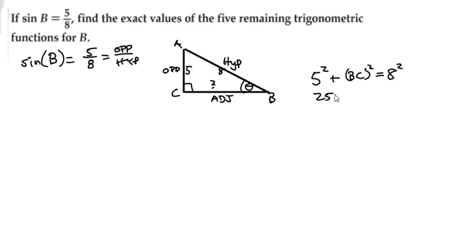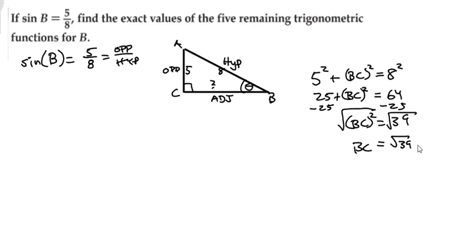So five squared is 25, we still have bc squared, and then is equal to 64, these are adding. So now let's subtract 25 from both sides. That's going to give me 39 is equal to bc squared. And then to get rid of that, we take the square root. So we're going to get the length of bc, which is this adjacent side, is equal to the square root of 39, because this cannot be simplified anymore.